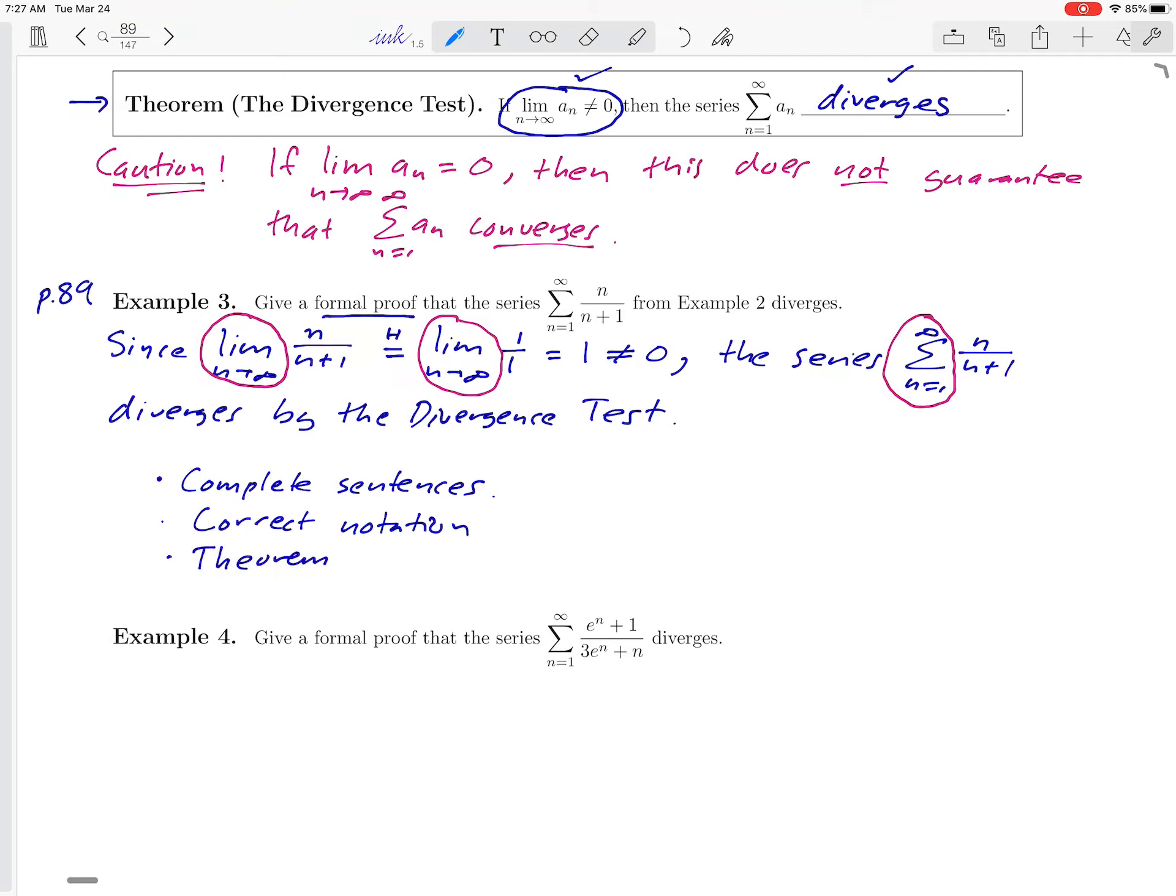And then finally, to mention the appropriate theorems that you're using. So it's an important feature of this proof that at the end of it, we said which test we use, the divergence test. That's what justified all of our argument.